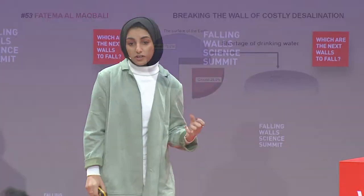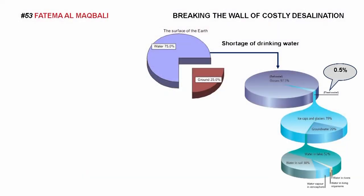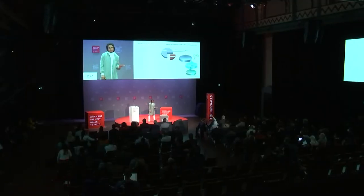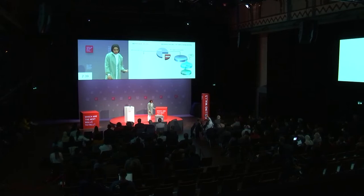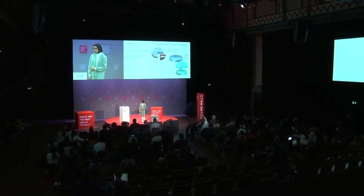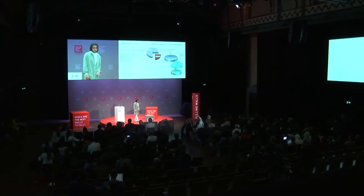One of the biggest challenges in the world right now is providing affordable drinking water for humans. Less than 1% of water on Earth is accessible for usage and 97% is sea water, so the only possible option for water production is desalination. There are different technologies for desalination, which all are energy consuming.